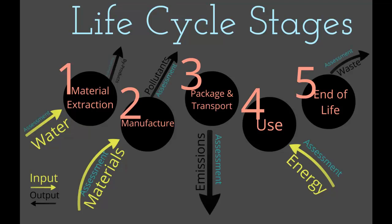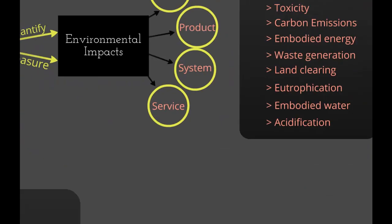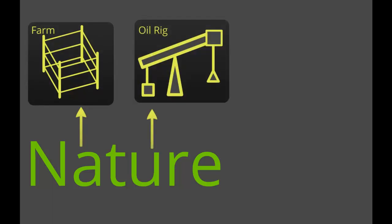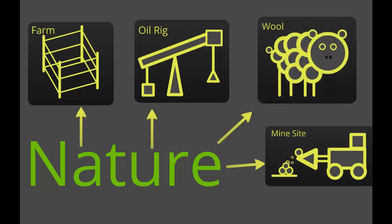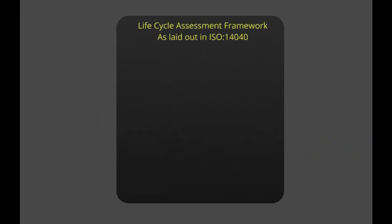Life cycle assessment breaks down all the parts and processes that go into a material or a product to then be able to assess in detail where environmental impacts occur across the entire life of a product. Everything that's created comes from nature at some point. So in life cycle assessment we go all the way back to the establishment of a farm, an oil rig, a mine site. Shearing something off a sheep's back or cutting a tree down is considered part of the material extraction process. So in order to make wool you have to grow a sheep, which means you have to clear land and grow the food. All of those things are considered part of a life cycle assessment.